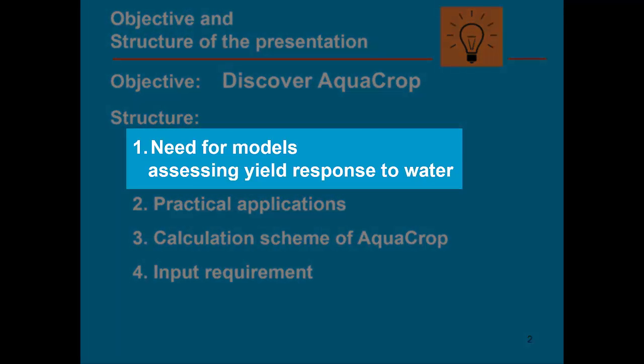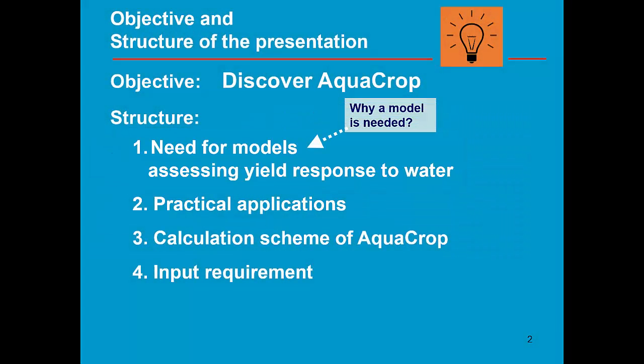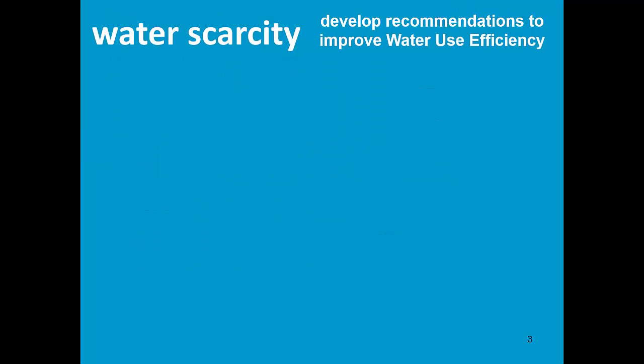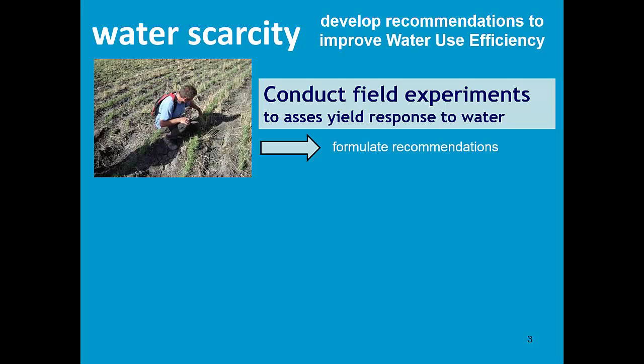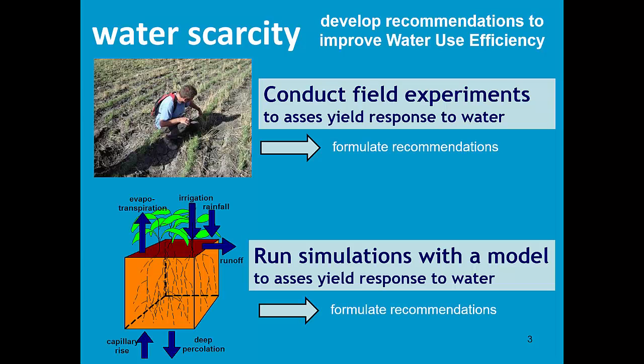We will first focus on the need for models assessing yield response to water — why a model is needed. To develop recommendations to improve water use efficiency, we can run field experiments to assess the yield response to water. However, it will take many years before valid recommendations can be formulated because you require different weather conditions, different crop species, and different managements. So instead of conducting field experiments, we can also run simulations with a model.